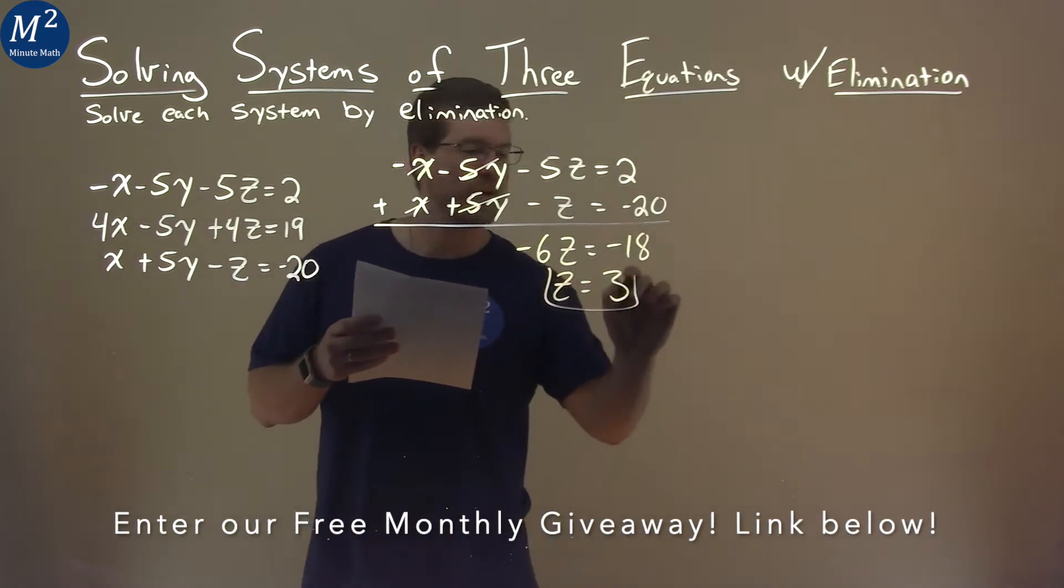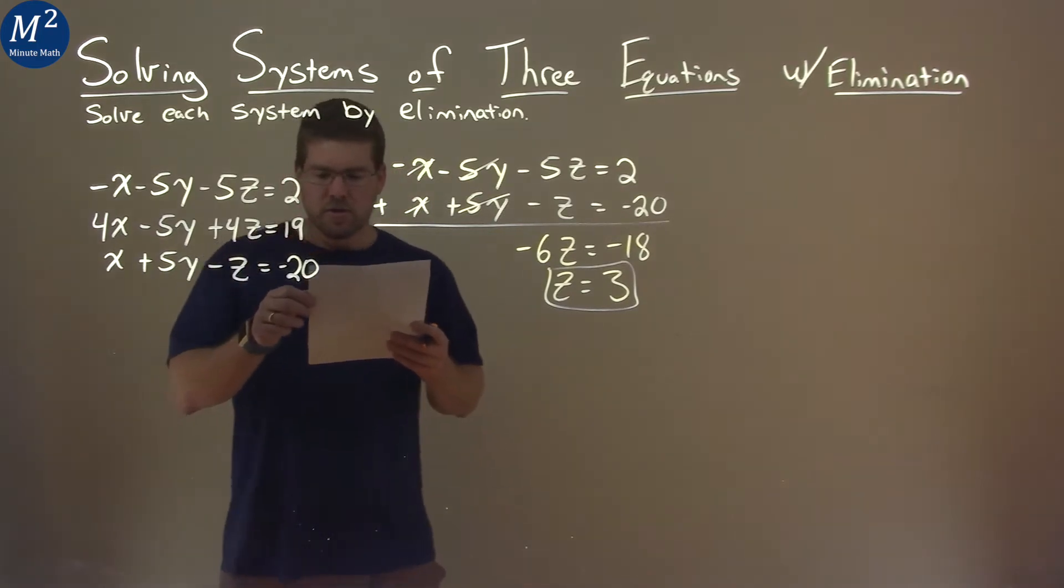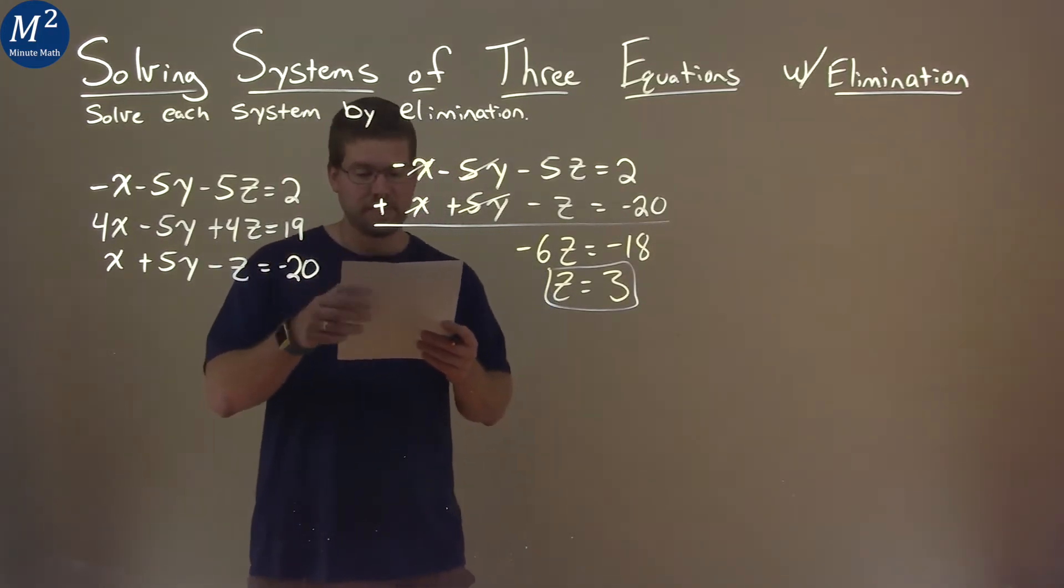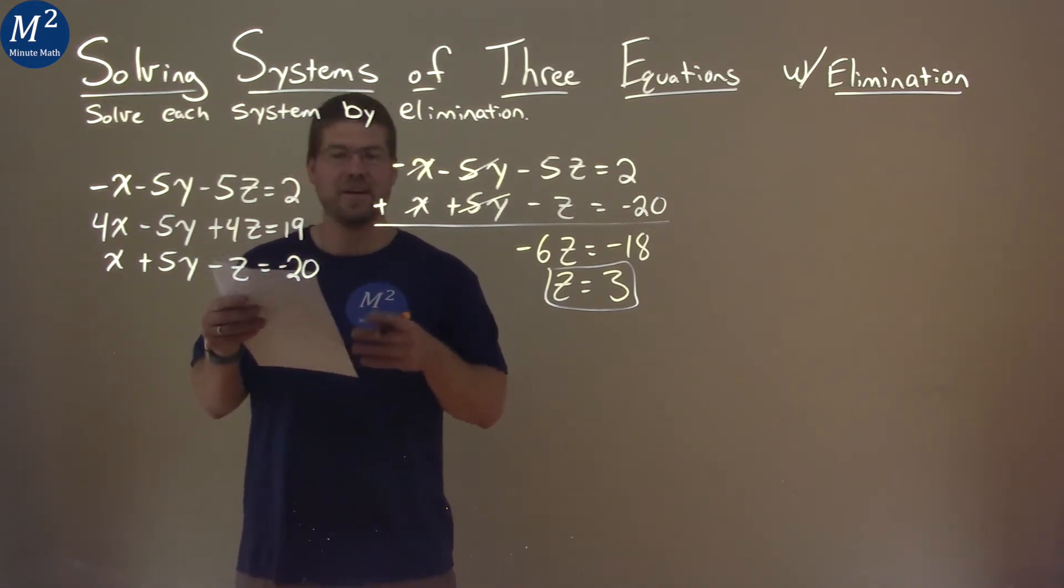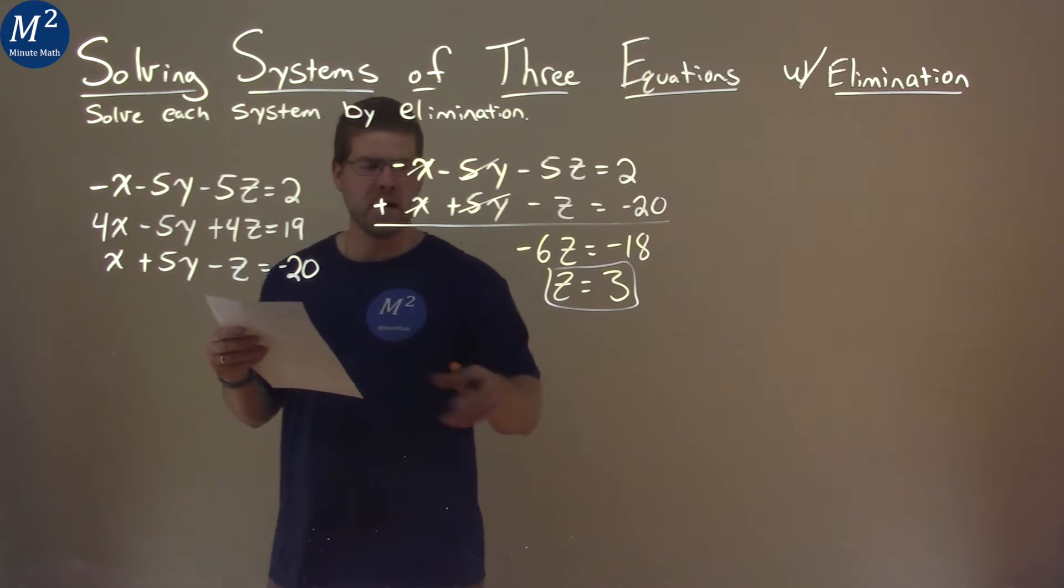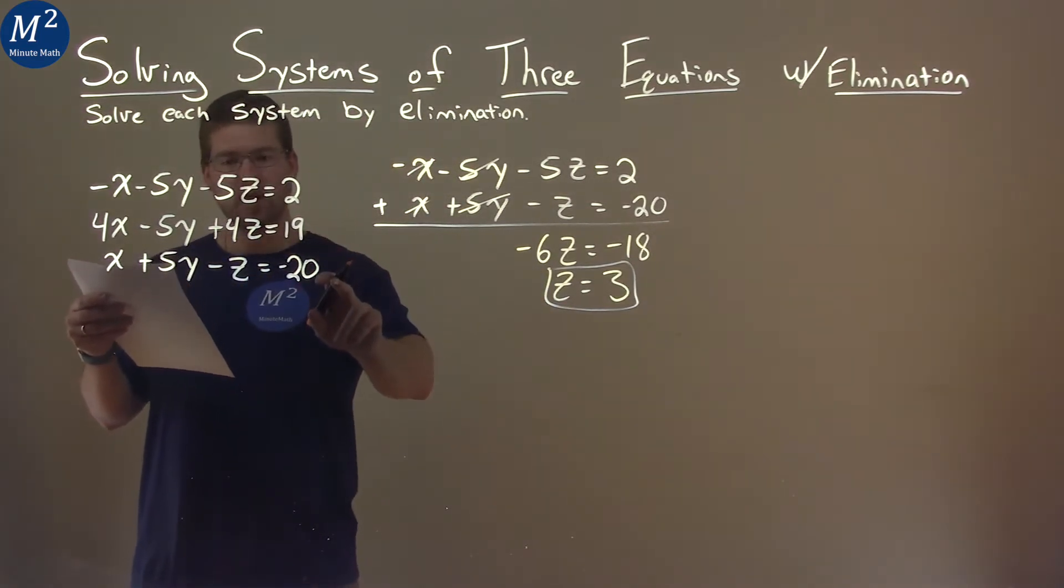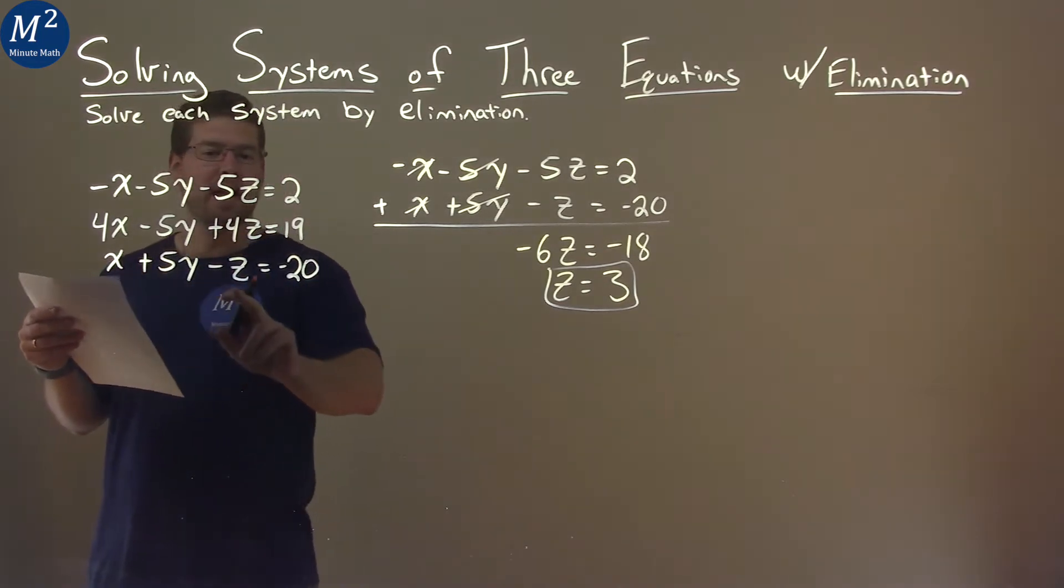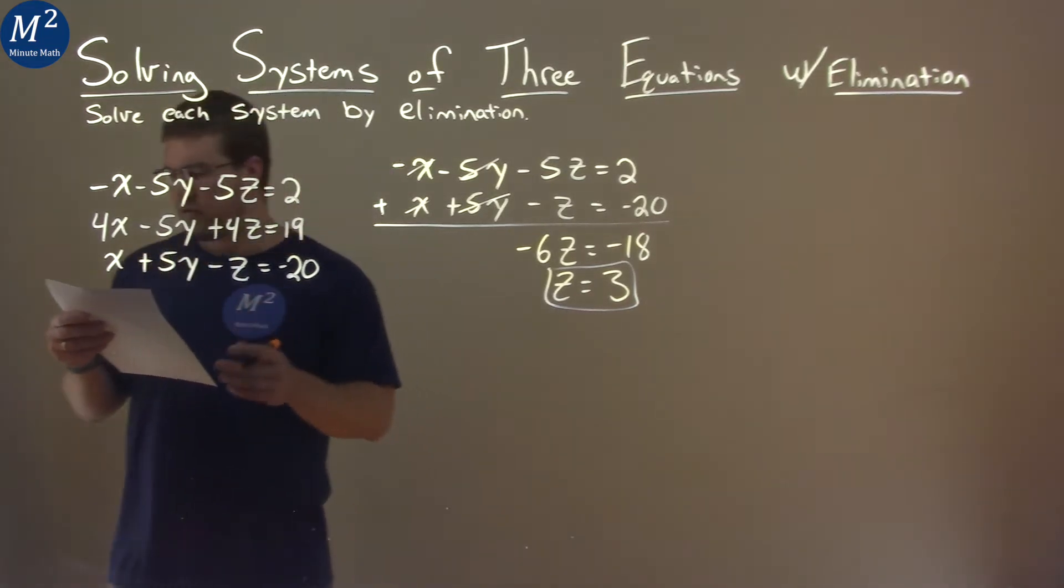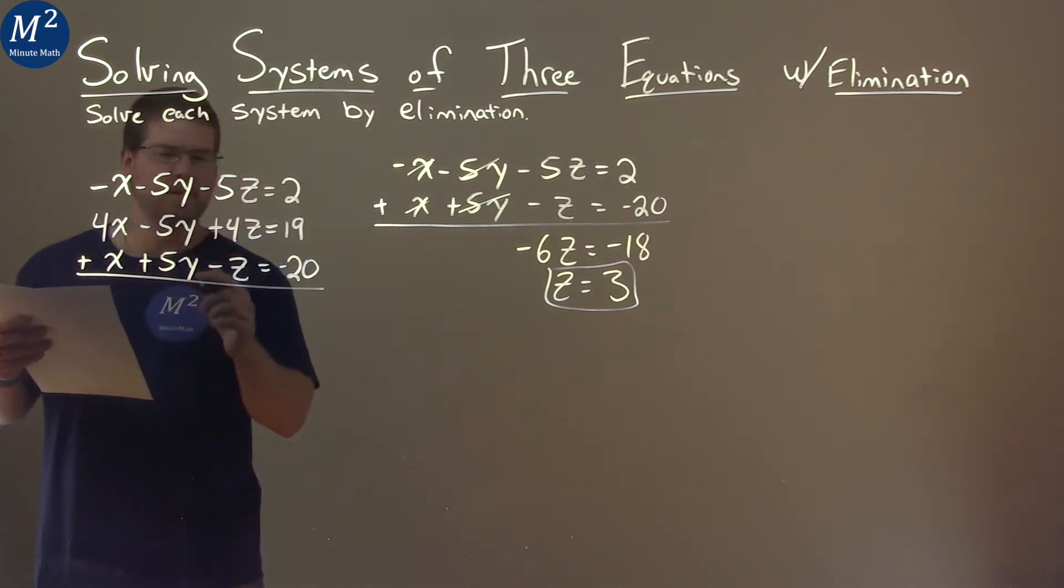So we now have one answer here, one variable we have found. We need to find another one. So where can we go from here? We can take two other equations and see if we can eliminate something to maybe get a variable by itself. So we have z equals 3, but if I look at the second equation and the third equation, if I add them together, my y's will cancel, and I'll be left with an x and z, but I already know one of the z values. So that's what we're going to do. I'm going to take these two equations and I'll just add it here, just to save some space.